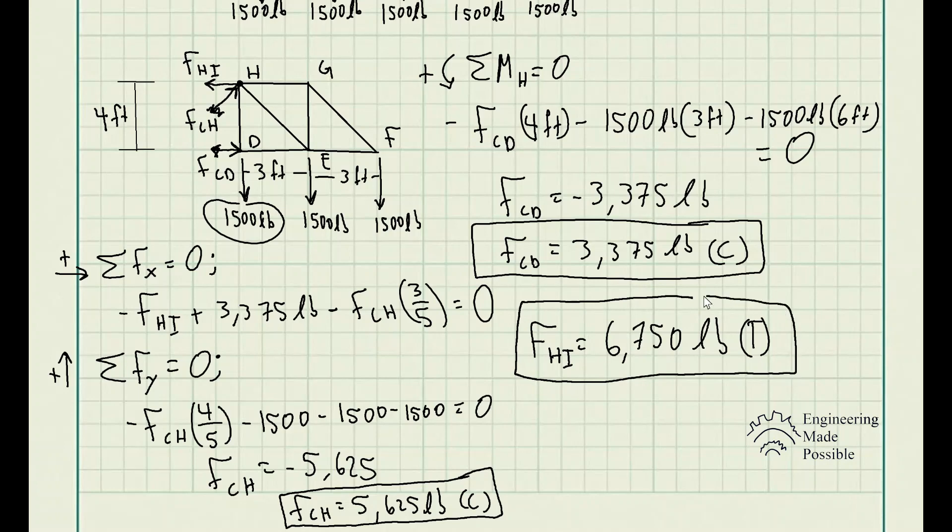Now, one thing to note here is be careful. Since we initially did the sum of forces along the x direction, at this point, we were assuming CH member was in tension. But we found out that it's actually in compression. So meaning when it's in compression, it's going to the right, that means this is actually a plus sign. So just be careful with these small details because ultimately it can give you a wrong answer.